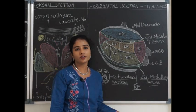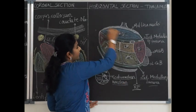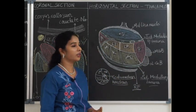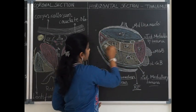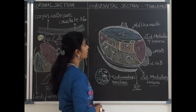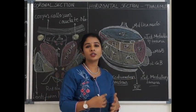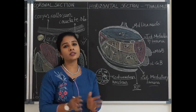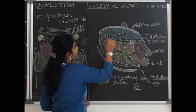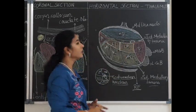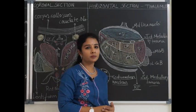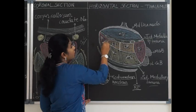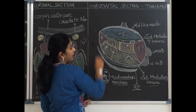Now let's see the nuclei of the thalamus. The thalamus has a narrow anterior end and a broader posterior pulvinar end, with a medial and lateral surface. The thalamus itself is divided into three parts by a Y-shaped white matter present within it. The anterior nucleus is present between the two limbs of the Y.